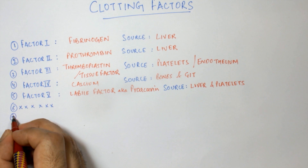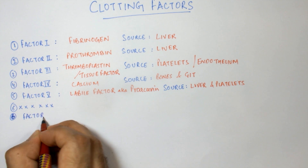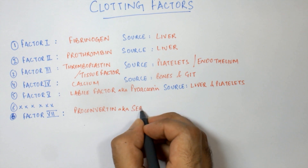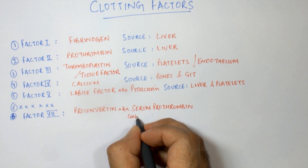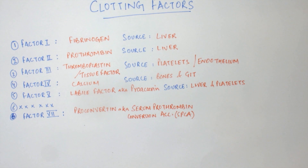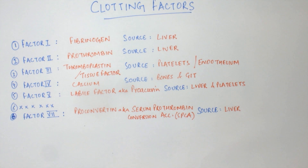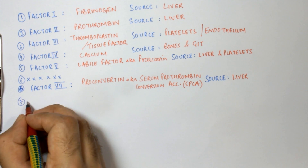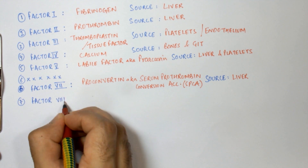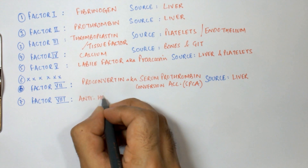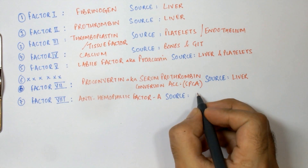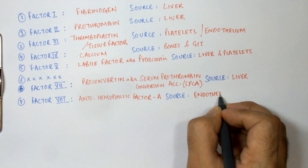Factor number seven is the stable factor, also known as proconvertin or serum prothrombin conversion accelerator. The source of factor number seven is the liver. Factor number eight is the antihaemophilic factor A, and the source of this factor is the endothelium of the blood vessels.